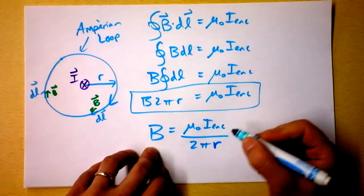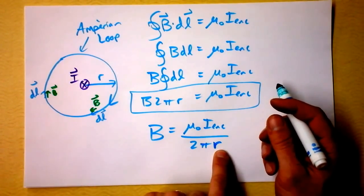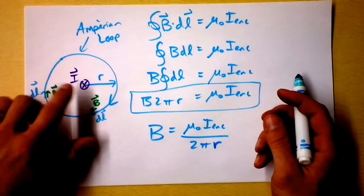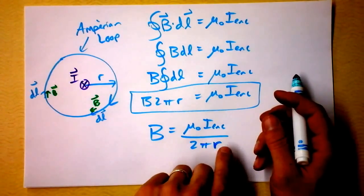Which means that the field gets weaker as you get further away, but not very quickly. This isn't an R-square law. This is just 1 over R. So the field gets weaker, weaker, weaker as we go farther away, but not very rapidly.